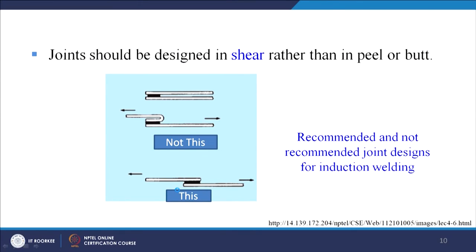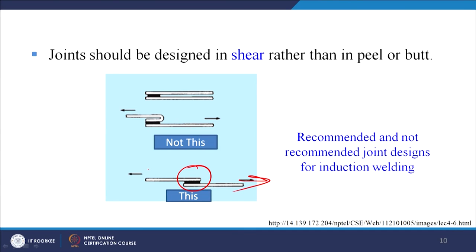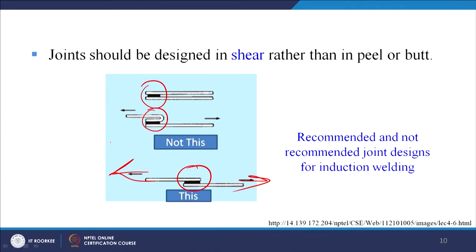Another design guideline: joints should be designed in shear rather than in peel or butt mode. When designing a joint to be made by induction welding of plastics, the load should act in shear. Joints designed for peel or butt loading should be avoided. Recommended and not-recommended joint designs for induction welding illustrate this — always design so joints experience shear forces rather than peeling or tensile forces.